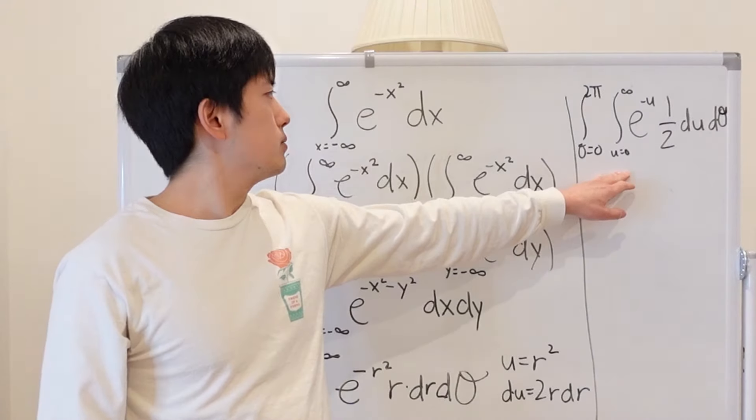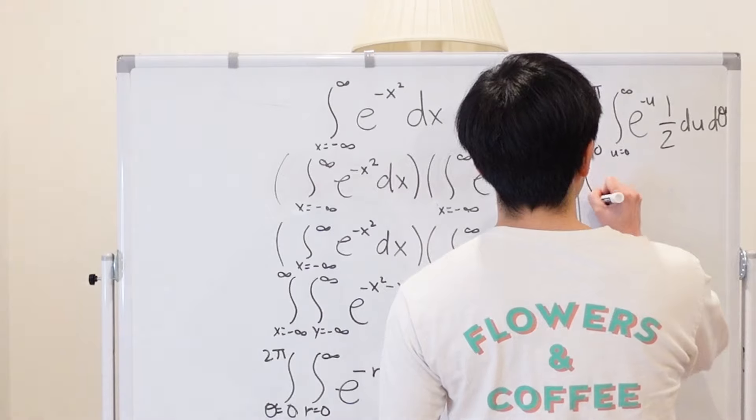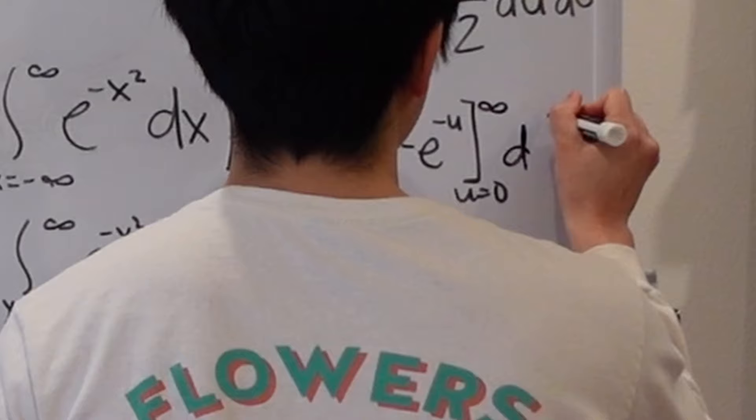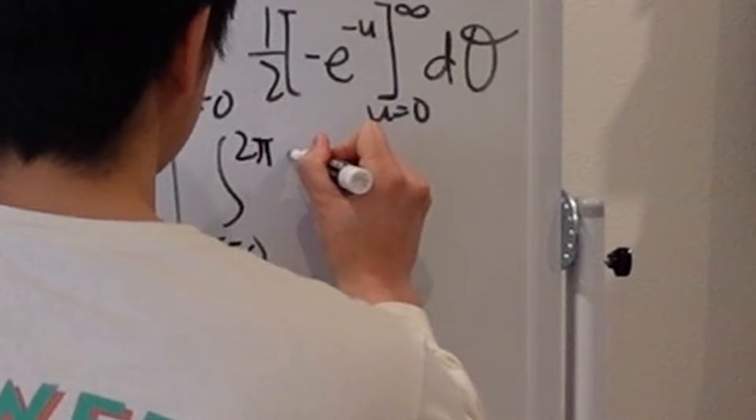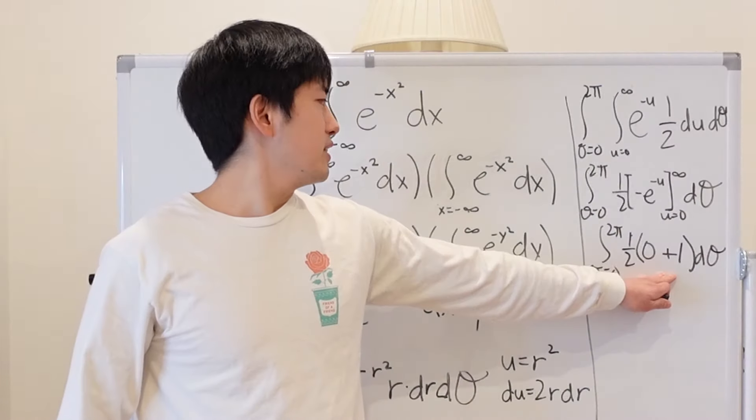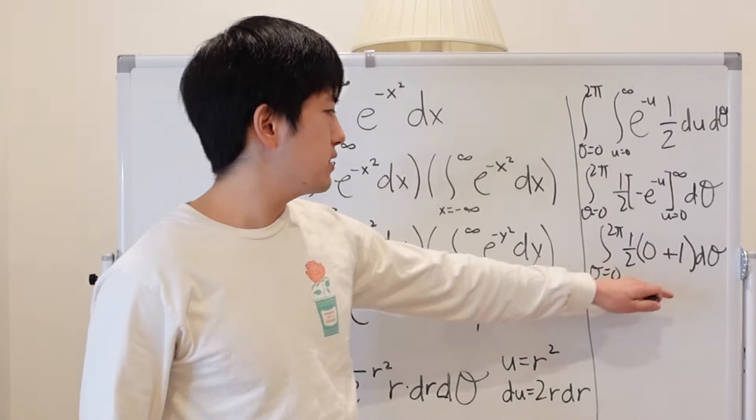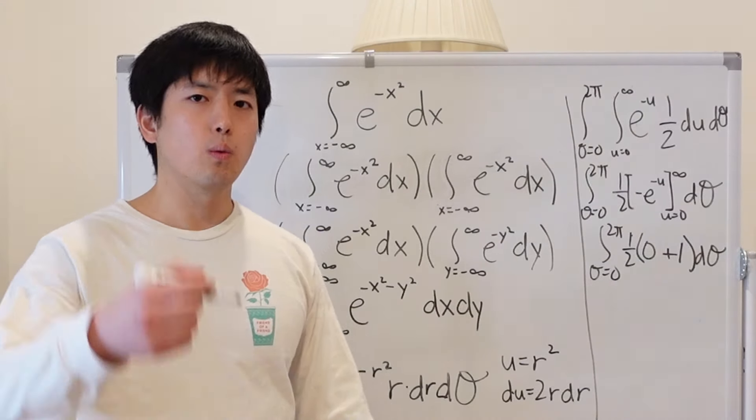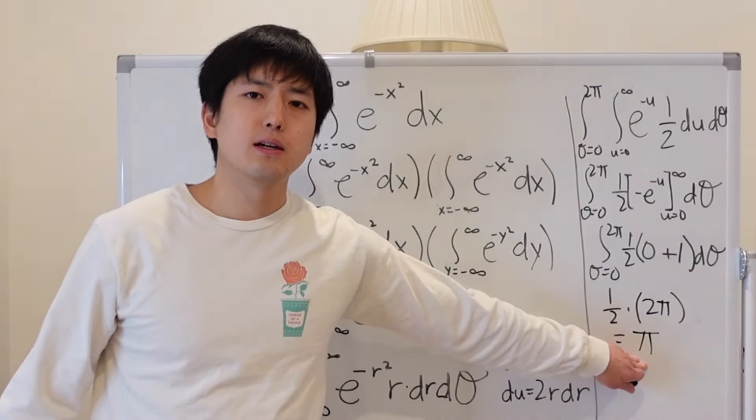So looking at this integral, it looks pretty easy, right? Just a simple exponential here. And we're almost there. So this integral here inside is one half, which means that we're integrating across a constant from theta equals zero to 2 pi, which gives us pi. Okay?